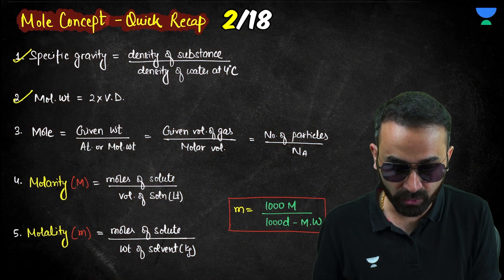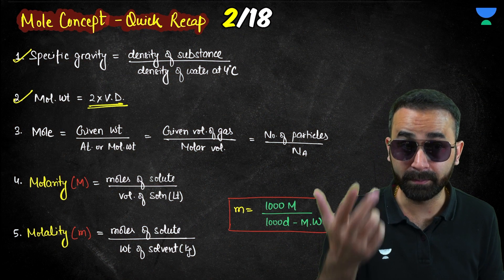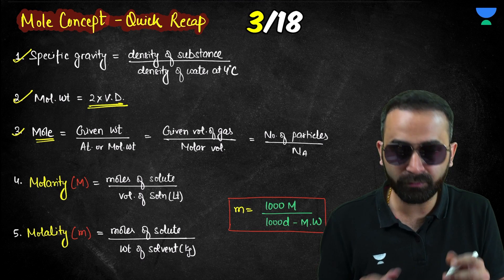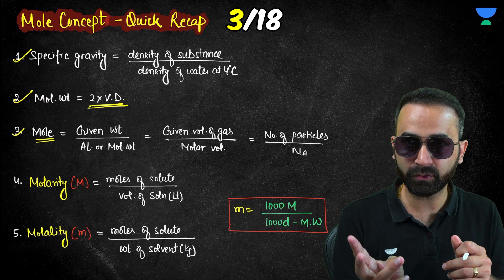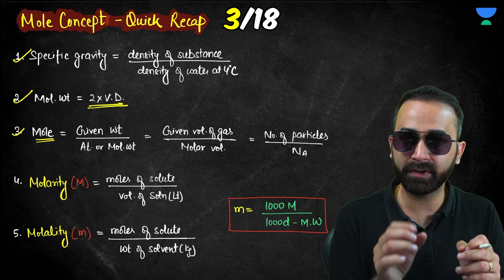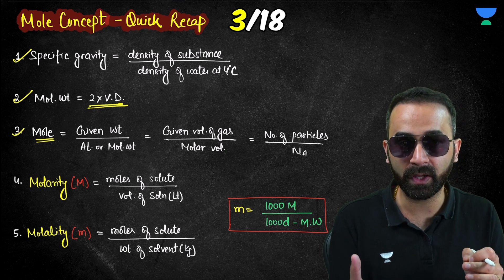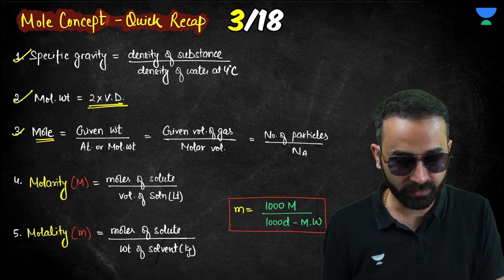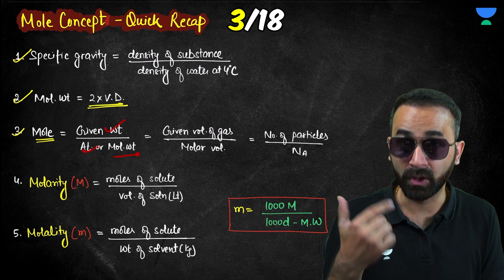Second is molecular weight — it is twice the vapor density. For calculating the number of moles, it is the given weight of the solute (or any species whose moles you want) divided by its atomic or molecular weight.